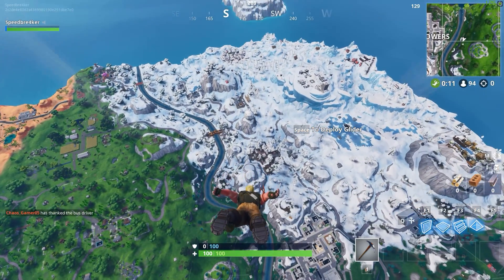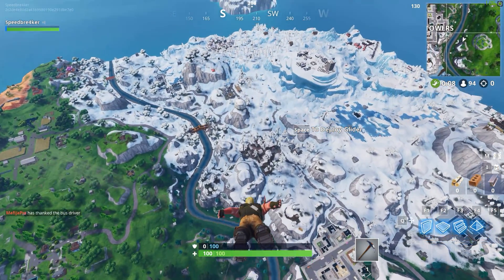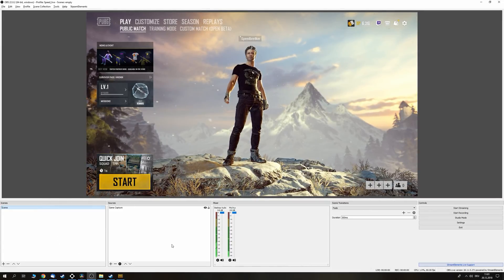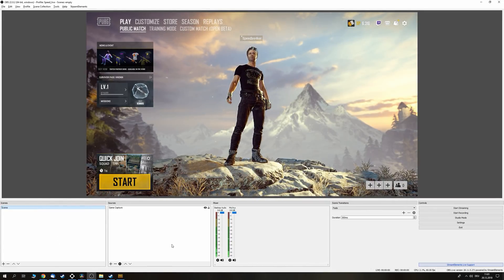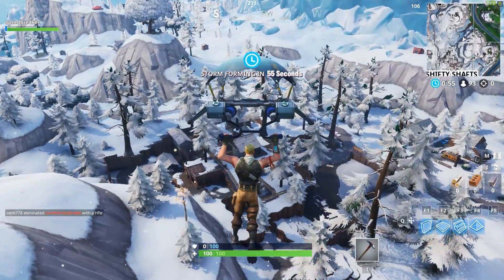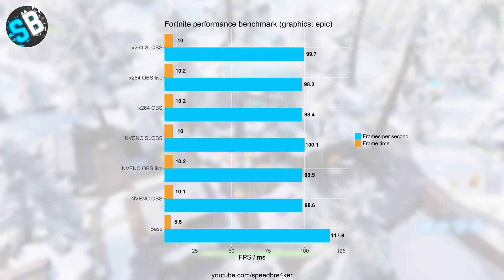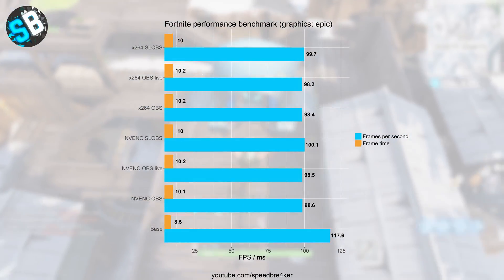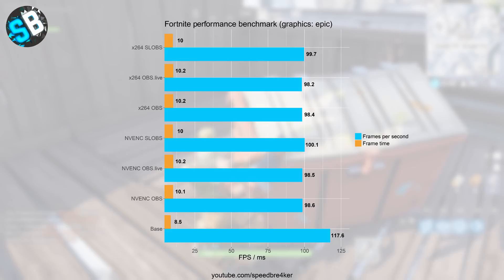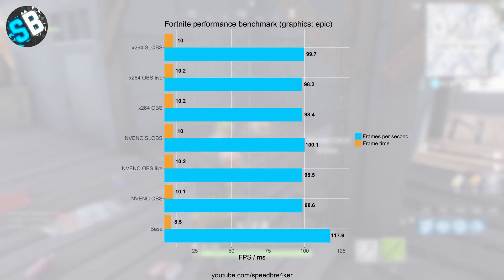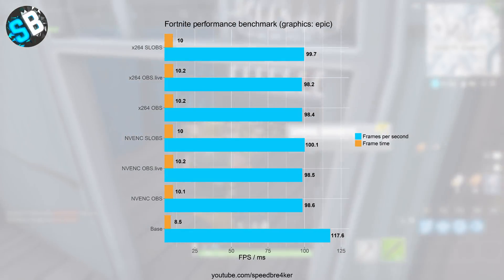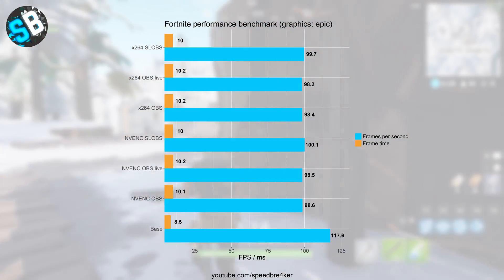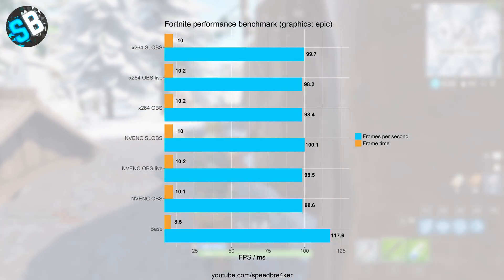Beginning with Fortnite, I'd like to show the raw performance difference between the different OBS derivatives by simply having a game capture enabled — one scene, one source. Shown in blue are frames per second and in orange frame time, which is the time it took my computer to produce the next frame. At the bottom we have the base without streaming at all, then three blocks with NVENC and three blocks with x264 streaming. Fortnite is a very GPU-intensive game, so using NVENC over x264 doesn't yield much higher performance as it would with more CPU-intensive games.